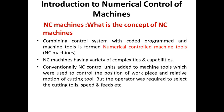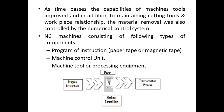Numerical control finds its principal applications in metal machining processes. Machine parts are designed in various sizes and shapes, and in small to medium batches; to produce each part, a sequence of machining operations may be required. As time passes, the capabilities of machine tools improved, and in addition to machining the cutting tool and work piece relationship, the material removal was also controlled by the numerical control system. At that time there was lots of material wastage which could not be controlled, because every time the programming system had to be changed.